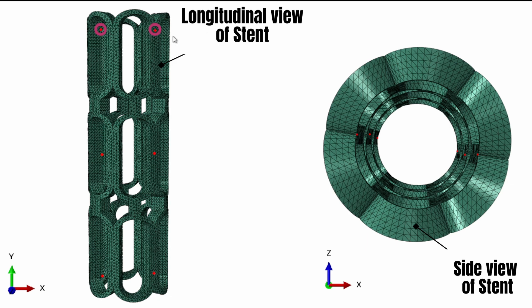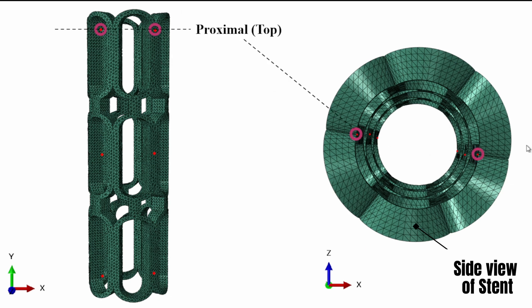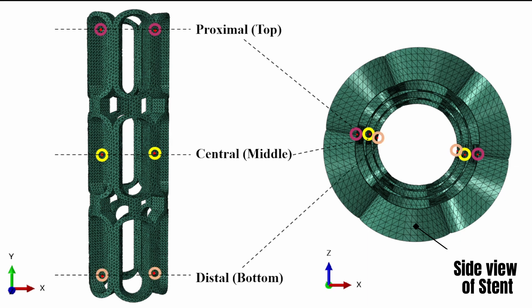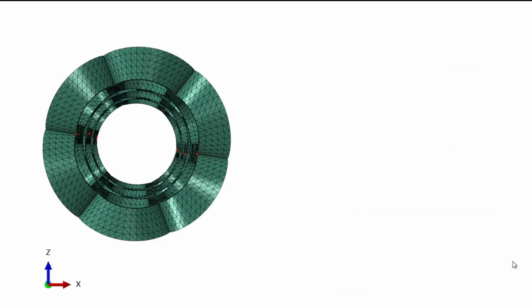For example, the first point here is the proximal or top position of the stent. We also have the central ones, and then the distal ones. We need to note these because they are all important when extracting the elastic recall. Looking more closely at the proximal ones, we need to note the node number for points one and two — one on the left and one on the right of the material in the XZ view.